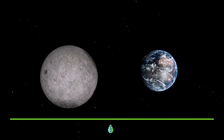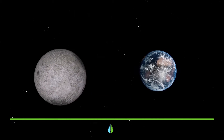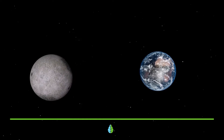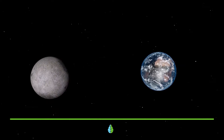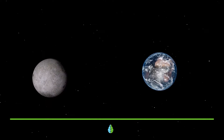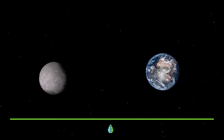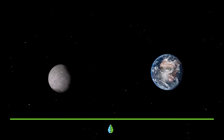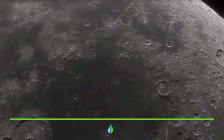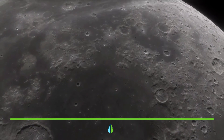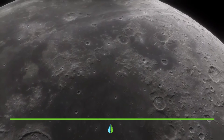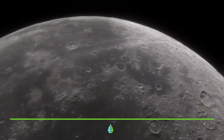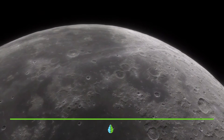The moon is the natural satellite of our planet and is the fifth largest satellite in the solar system, thanks to its radius of 3,474 kilometers. The moon is composed mainly of oxygen, silicon, magnesium, iron, calcium, aluminum, chromium, titanium, and manganese.